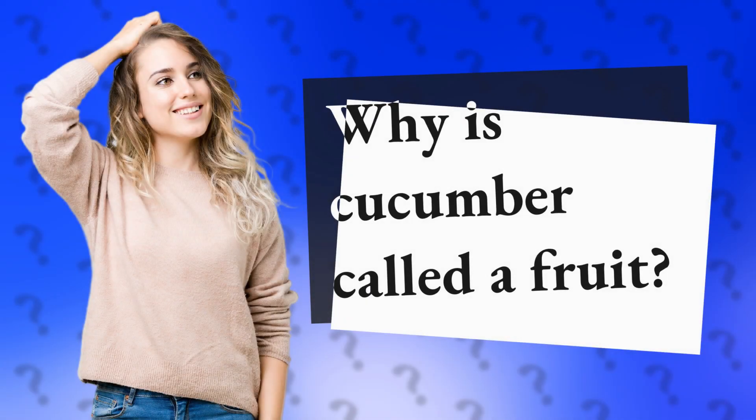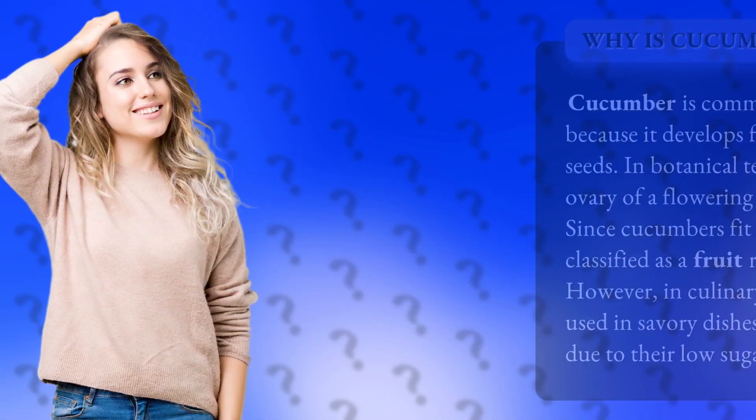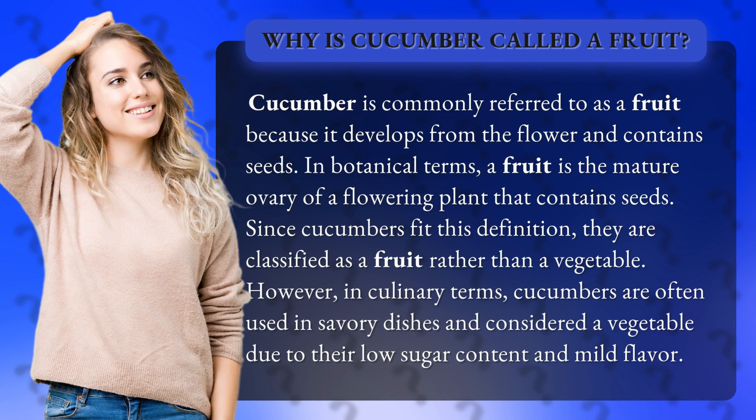Why is cucumber called a fruit? Cucumber is commonly referred to as a fruit because it develops from the flower and contains seeds. In botanical terms, a fruit is the mature ovary of a flowering plant that contains seeds. Since cucumbers fit this definition, they are classified as a fruit rather than a vegetable.